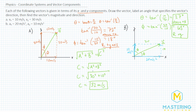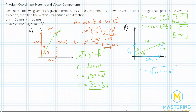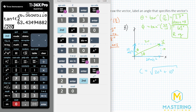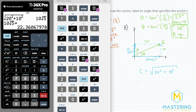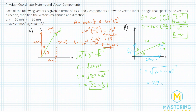Lastly, let's find the magnitude using c equals the square root of a squared plus b squared. That's the square root of 20 squared plus 10 squared, which gives us 10 root 5, rounding to 22 meters per second squared. So here are all the answers for the magnitude and direction for both vectors.